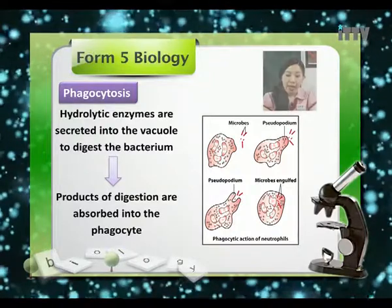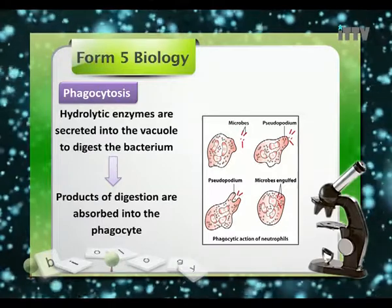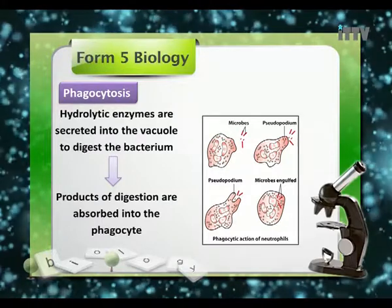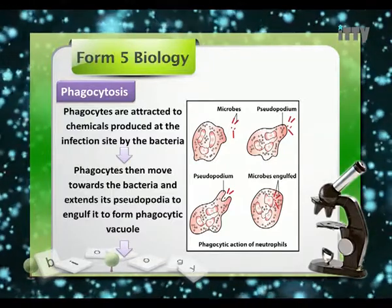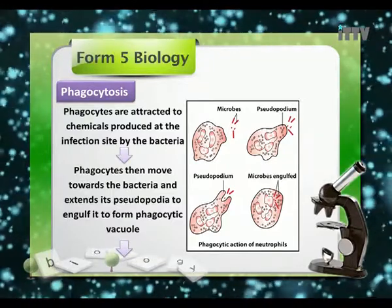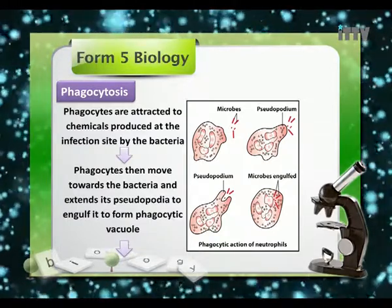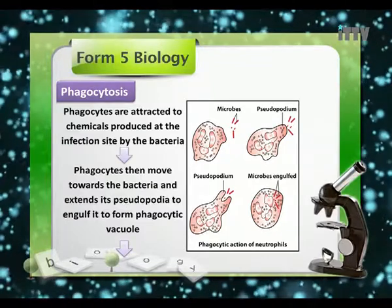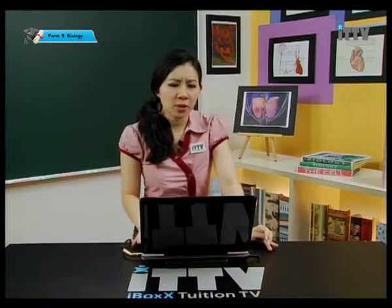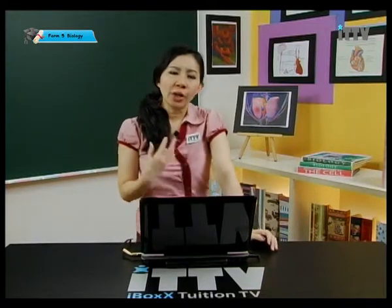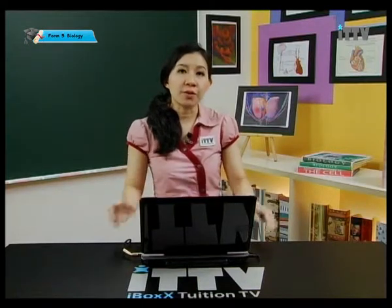Pseudo means fake and pseudopodium means fake legs. The phagocytes will be attracted to chemicals produced at the infection site and produce these fake legs to engulf the pathogen. A vacuole will be produced at the site of engulfment, and it is really wonderful how phagocytosis can destroy pathogens that have successfully crossed the first line of defense.